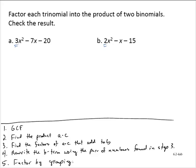Let's see example a. We have 3x squared minus 7x minus 20. There's no GCF, so let's find the product ac. In this situation, a is 3, b is negative 7, and c is negative 20. Let's do a little side work: a times c would be 3 times negative 20, which is negative 60.